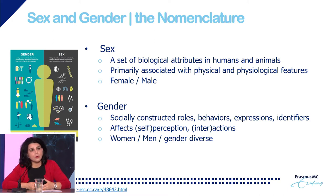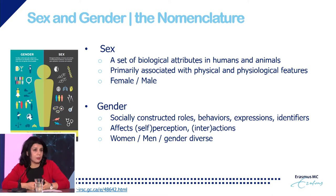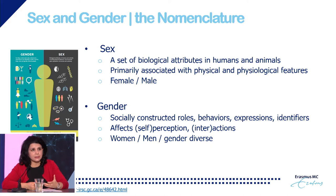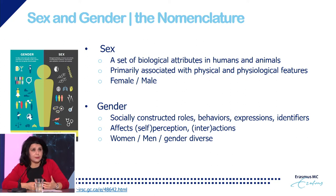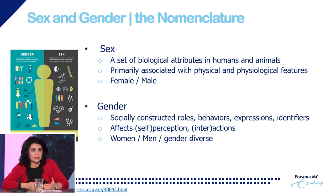Gender is composed of categories related to socially constructed roles, behaviors, expressions, and identifiers of women, girls, men, boys, and gender diverse people. It affects the way we perceive ourselves and others, and it defines the ways we act and interact in society. It also defines the distribution of power and resources in society. Gender is mostly categorized as women or girls and men or boys, but there is also diversity in the attributes of gender and how they are expressed.